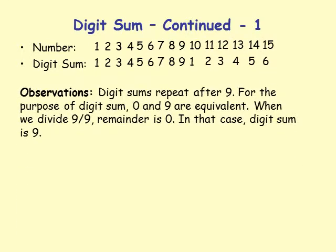For 14: 1 plus 4 is 5, digit sum is 5, and remainder when divided by 9 is 5. For 15: 1 plus 5 is 6, digit sum is 6, remainder is 6. Observation: digit sums repeat after 9 — the sequence 1, 2, 3, 4, 5, 6, 7, 8, 9 repeats with a period of 9.